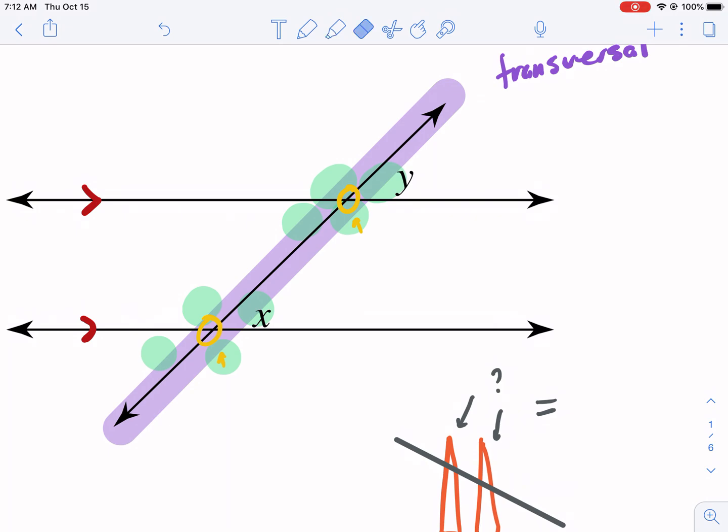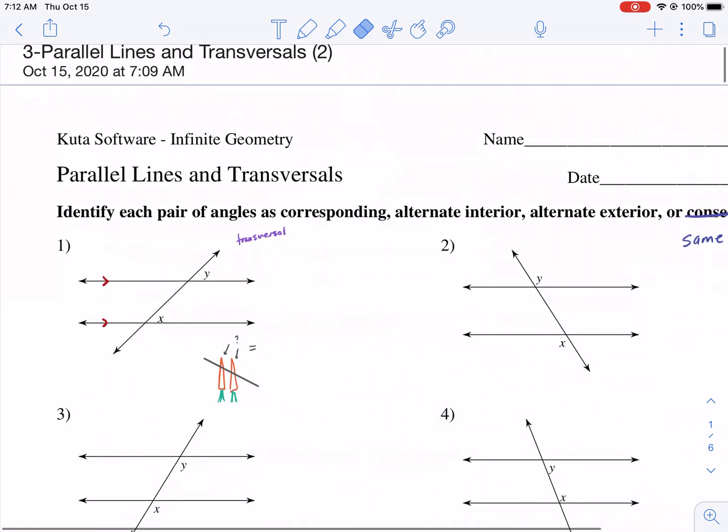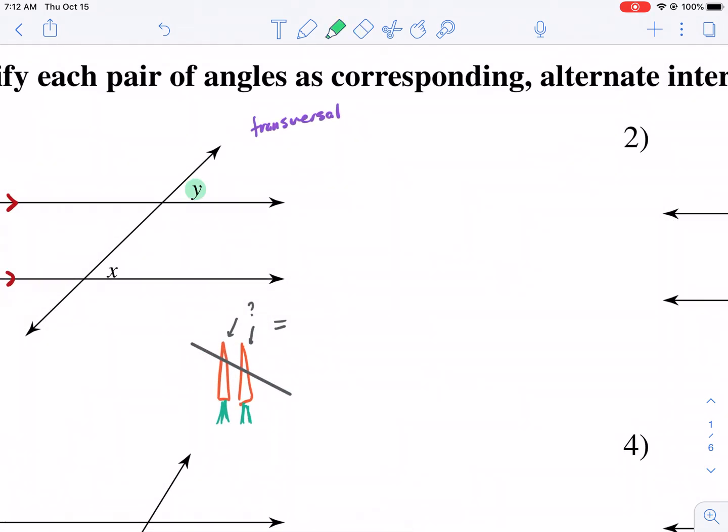And that's true for these right here, transversals. So when we have these two intersections here, as indicated by these yellow markings, it will create equal angles out of these intersections. Now, there's naturally created eight angles from these two intersections. There's eight angles.